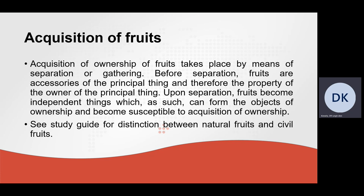Another form of original acquisition of ownership is the acquisition of ownership of fruits, which takes place by means of separation or gathering. Before separation, fruits are accessories of the principal thing and therefore the property of the owner of the principal thing. Upon separation, fruits become independent things which can form the objects of ownership and become susceptible to acquisition of ownership. Please see your study guide for a distinction between natural fruits and civil fruits.